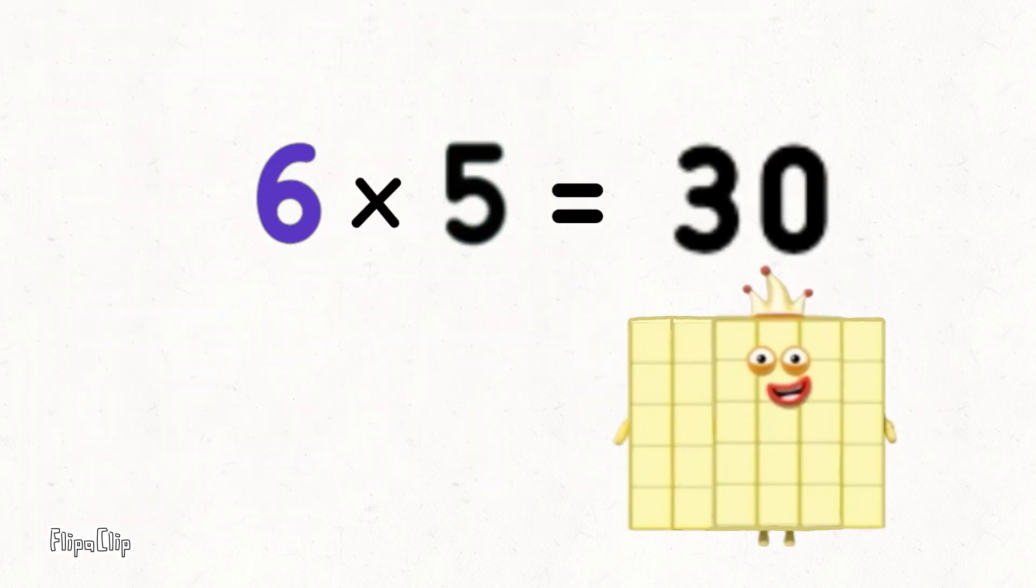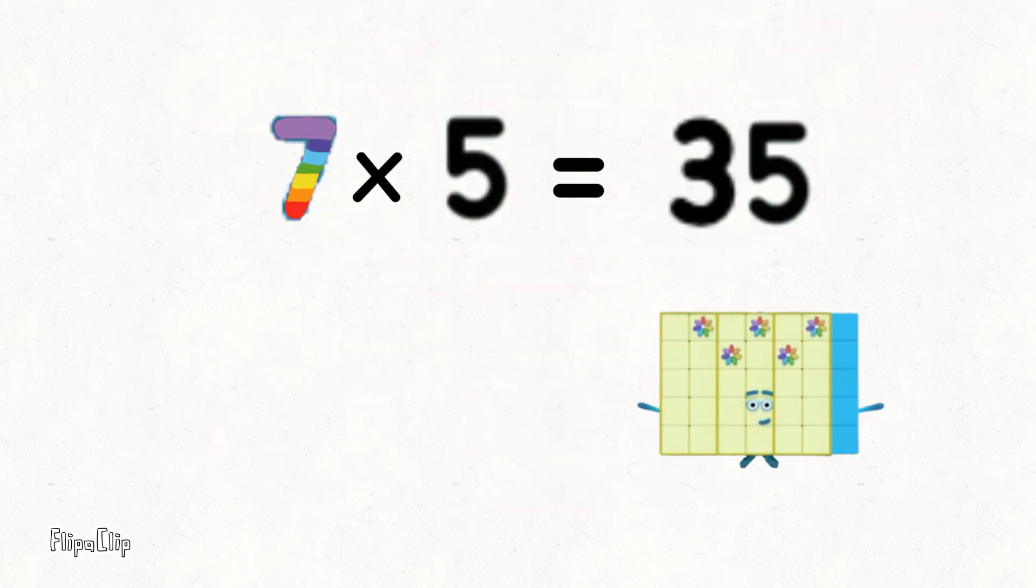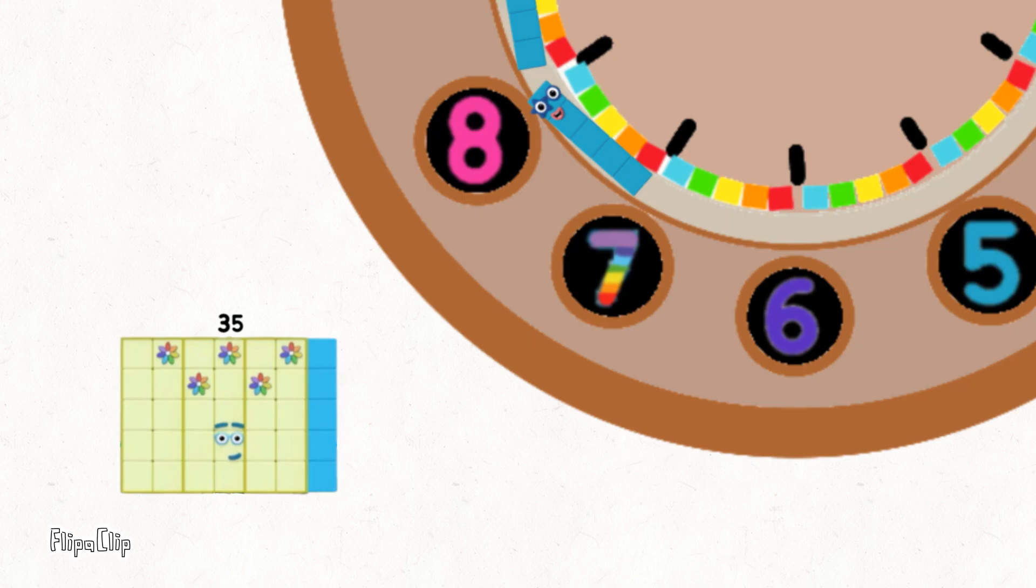Six lots of five are thirty. Now the hour's half past, so we move up at last. Seven lots of five are thirty-five. Counting in fives, you can work it out fast.